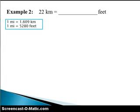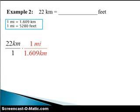We begin the same way, that is, by writing 22 kilometers in ratio form. Knowing that we need the kilometers to cross cancel, whatever unit ratio we use next must have kilometers on the bottom. So, we can use the first fact, putting one mile on top, and 1.609 kilometers on the bottom.